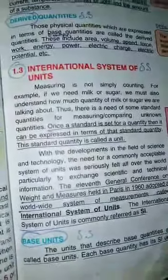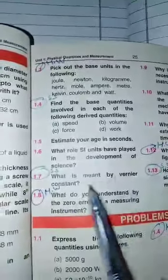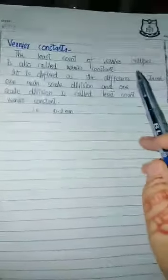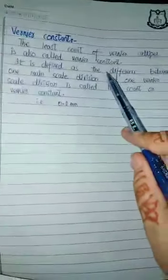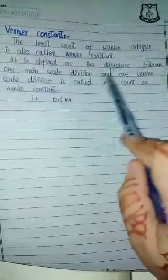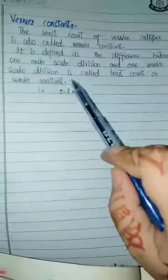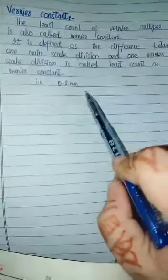Then we have question number 6: what is meant by Vernier Constant? I told you that the least count of Vernier Caliper we call Vernier Constant. The difference between the main scale division and Vernier scale division is called least count or Vernier Constant. This is 0.1 mm.